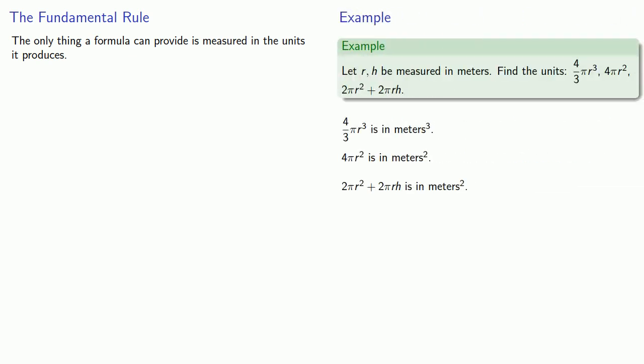It seems like this is sort of an added step that we're doing for no apparent reason, but it's actually very important, and we introduced the fundamental rule, and that's this: The only thing a formula can provide is measured in the units it produces. In other words, whatever units you get when you use a formula, those are the units you're stuck with. If nothing uses these units, then the formula is meaningless. Or, if what you actually want uses different units, the formula is irrelevant.